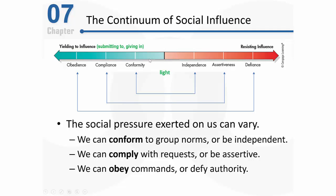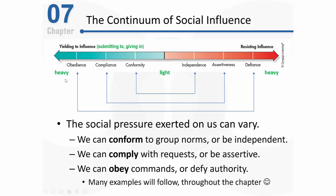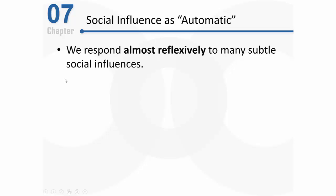Based on those terms — conform to group norms, comply with requests, obey commands — social pressure is sometimes relatively light and sometimes relatively heavy. On one end of the continuum we have relatively light social pressure, and on the other end relatively heavy social pressure. Our responses to social pressure are sometimes well thought out or even strategized, but sometimes our responses are virtually automatic.